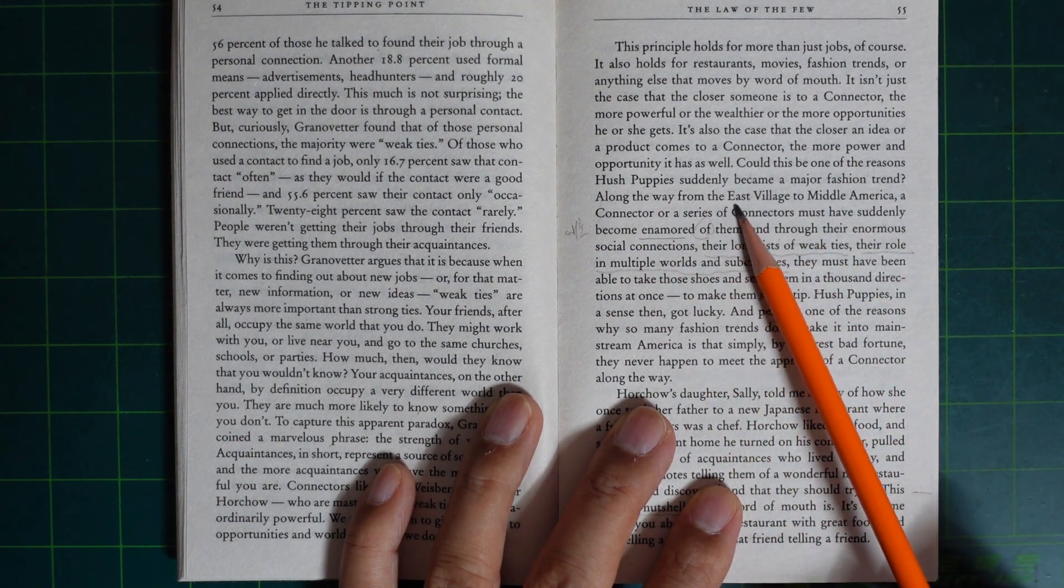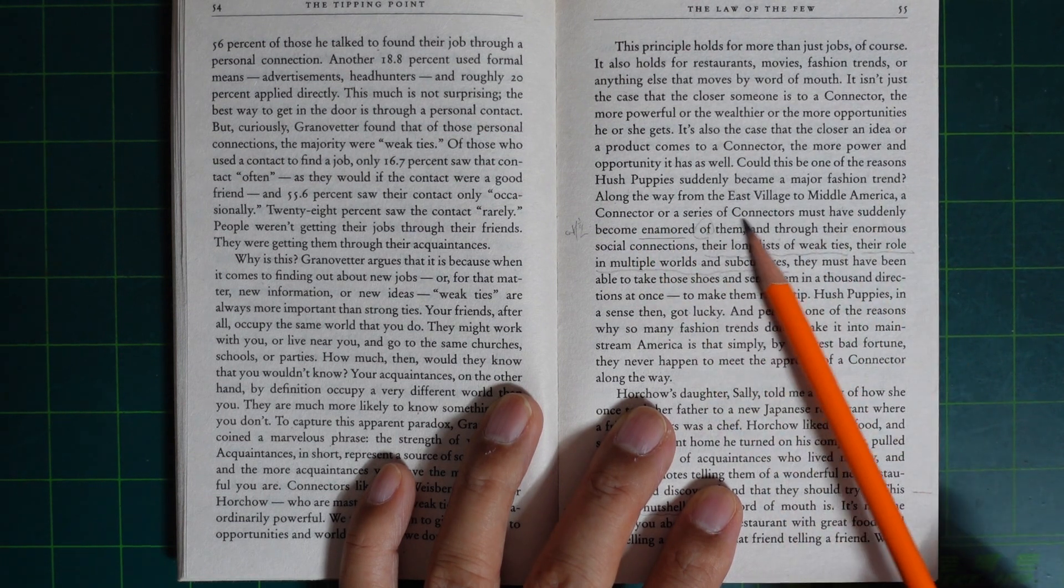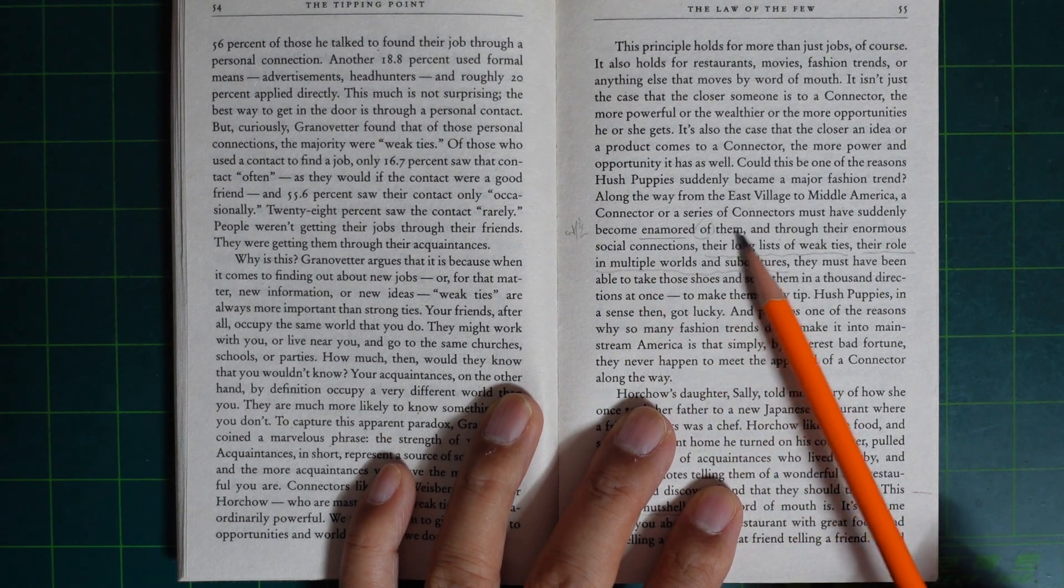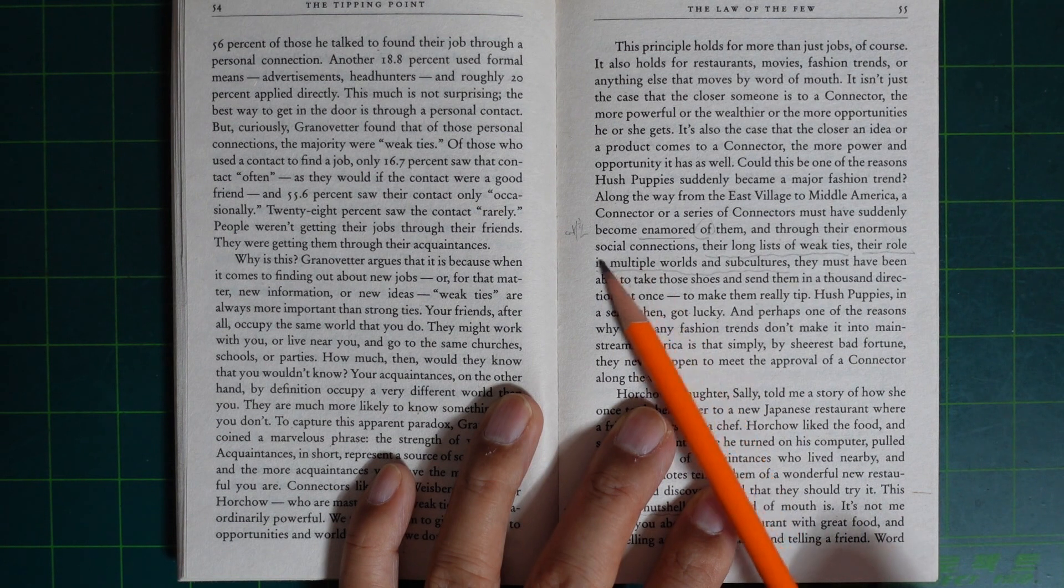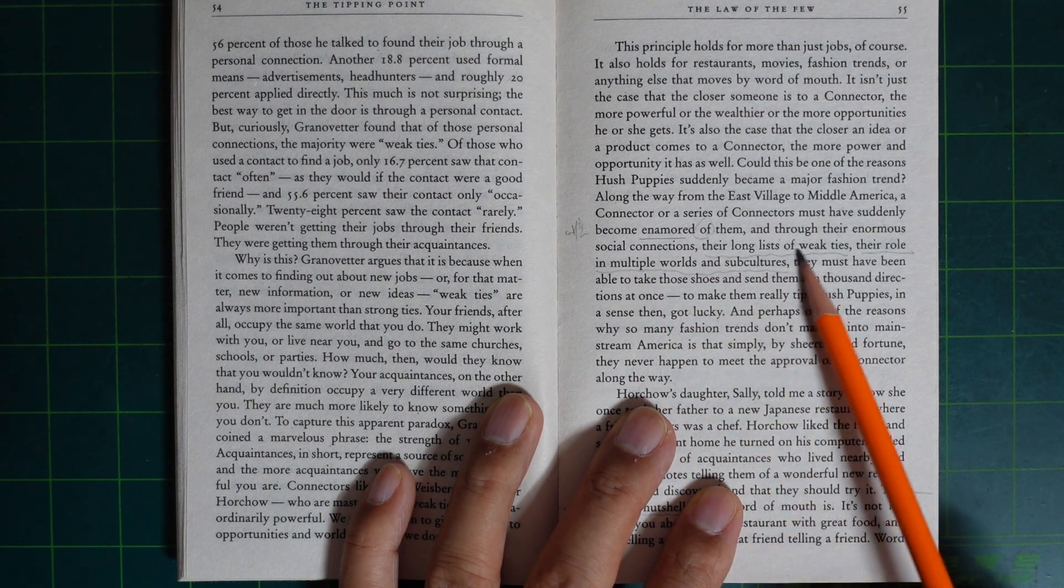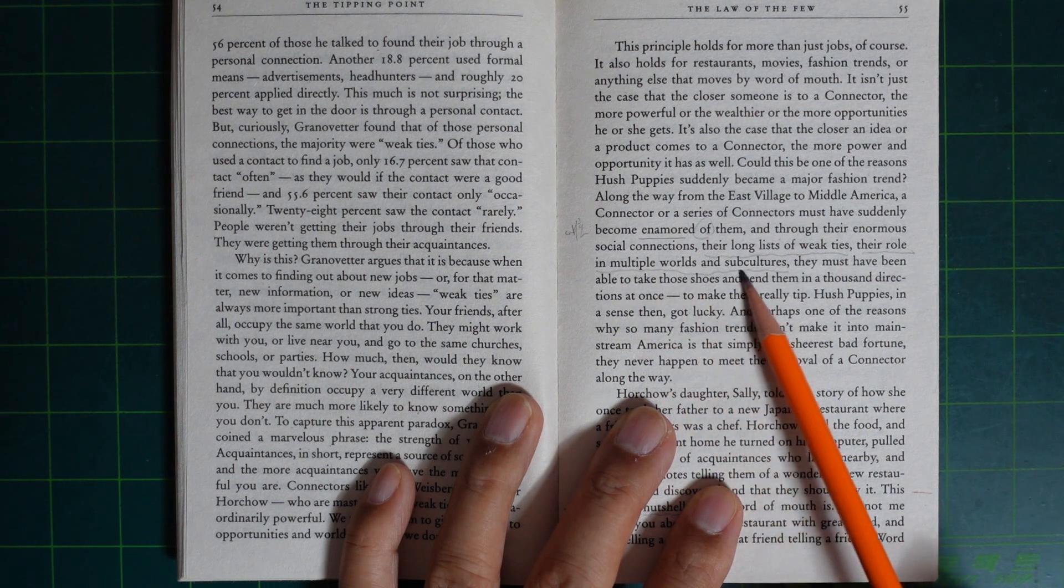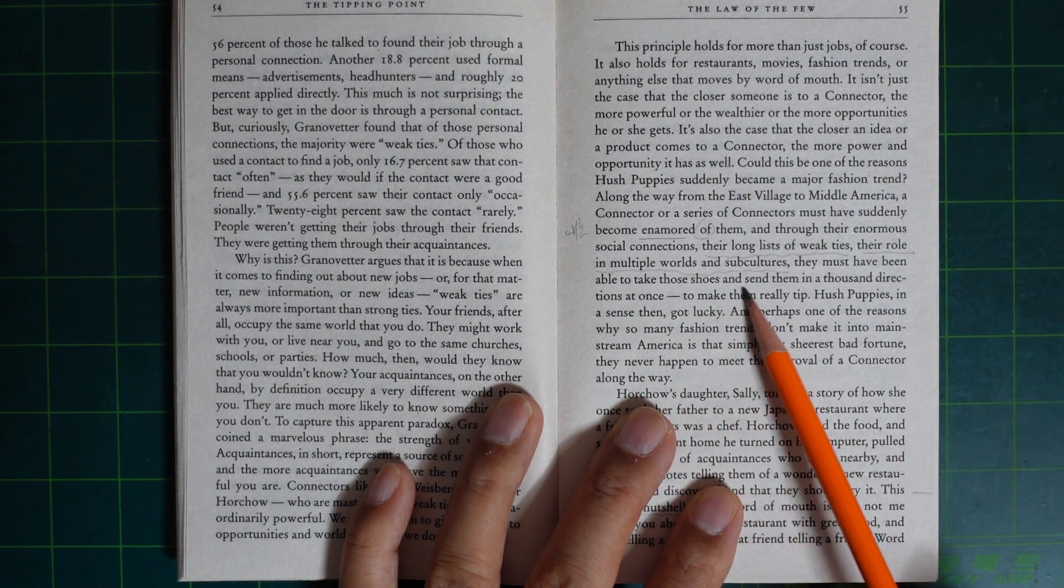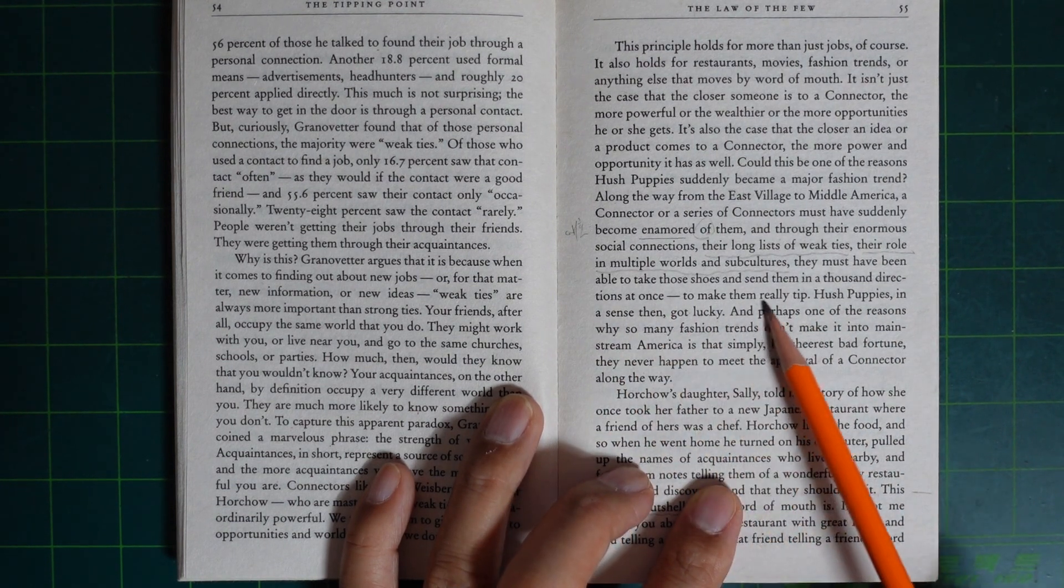Could this be one of the reasons Hush Puppies suddenly became a major fashion trend? Along the way from the East Village to Middle America, a connector or a series of connectors must have suddenly become enamored of them. And through their enormous social connections, their long list of weak ties, their role in multiple worlds and subcultures, they must have been able to take those shoes and send them in a thousand directions at once, to make them reality.